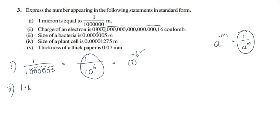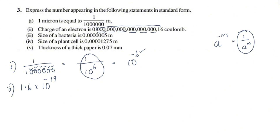Counting the digits: 3, 6, 9, 12, 15, 18, 19. The results give us 1 by 10 raised to 6, 1 by 10 raised to 7, and 1 by 10 raised to 9 with a negative sign.